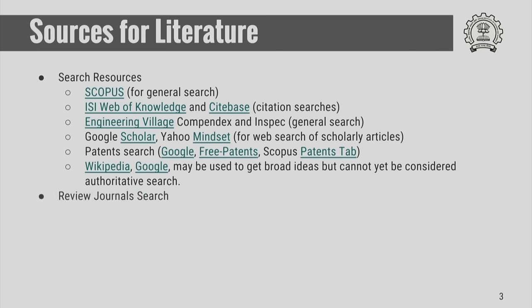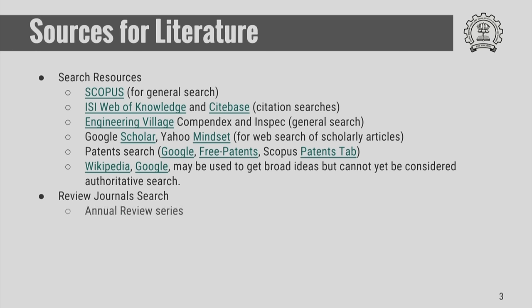Another place to look for literature when you first start your work is to look for specific journals known as review journals. These journals predominantly have review articles which look at the literature done on a particular body of work and summarize it in a nice and accessible manner. Some examples are the Annual Review series, Advances series, or Reviews of some topic series.